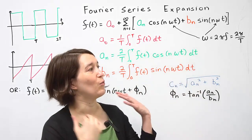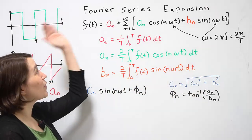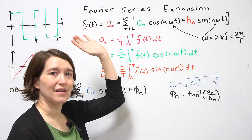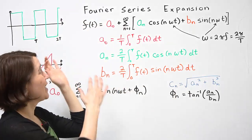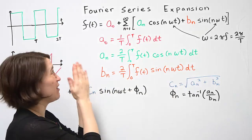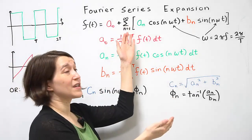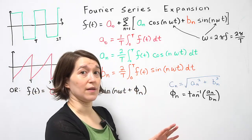Another example could be a sawtooth waveform also repeating over T here. Any waveform that's repeating can be written out as a Fourier series expansion, which just means we take that waveform and we divide it up into various coefficients multiplied by sines and cosines.